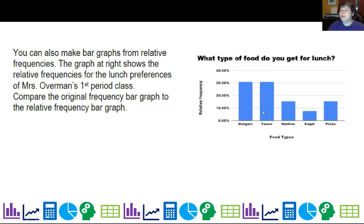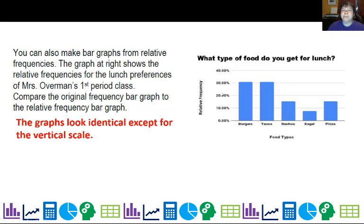You can also make bar graphs from relative frequency. Here's the bar graph when I change the burgers, tacos, nachos, bagel, and pizza to percentages. How does this compare to the original? It looks exactly the same except for the vertical scale. The heights look the same, the proportions are the same, it's just the scale.